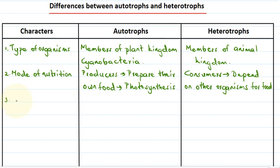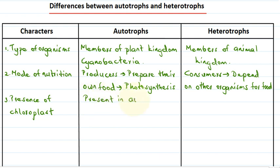The third character is the presence of chloroplasts. Chloroplasts help in the preparation of food — they are the site of photosynthesis, which is present in autotrophs. This is the site where the process of photosynthesis takes place, by which these organisms prepare their own food. Whereas in the case of heterotrophs, chloroplasts are absent, because they do not prepare their own food.